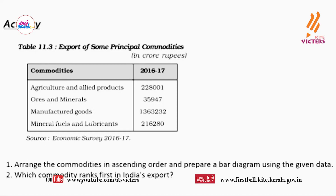After referring to table 11.3 — the export of principal commodities — you have to arrange the commodities in ascending order and prepare a bar diagram using the given data. You should also find which commodity ranks first in India's export.